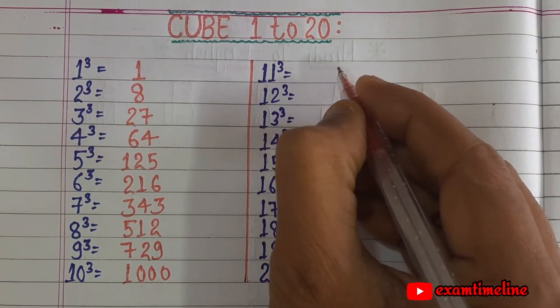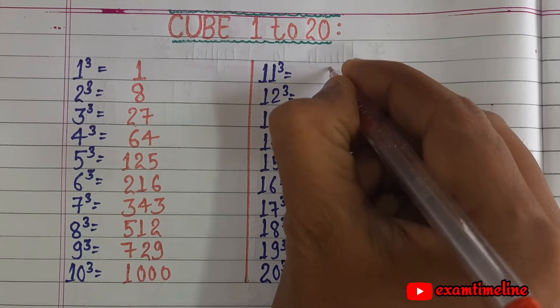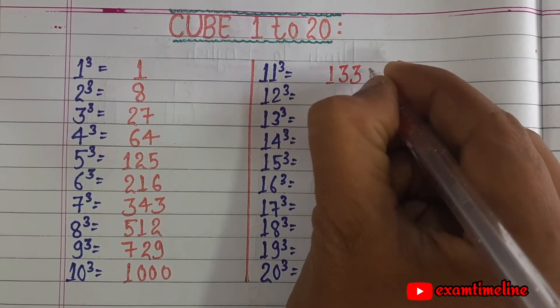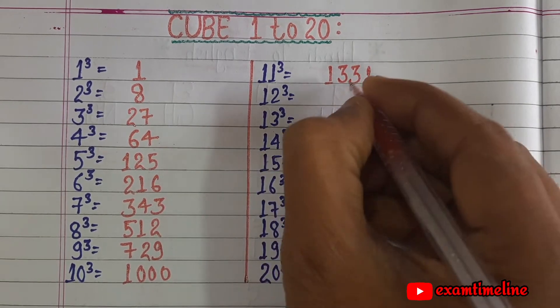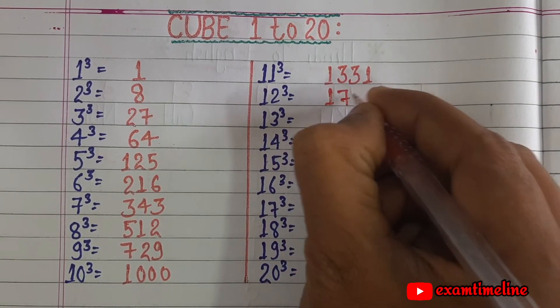11 cube equals 1331, 12 cube equals 1728.